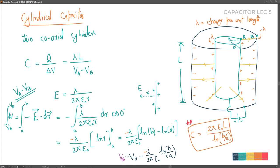You should also know the derivation, because this is where you see how potential difference is found - which is important for both electrostatics and capacitance. You will need to do this kind of derivation many times, so you must know the full process and cannot skip it.